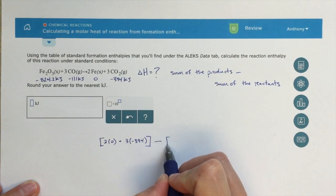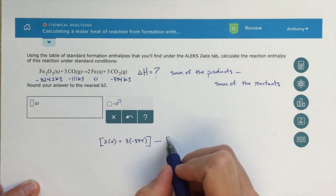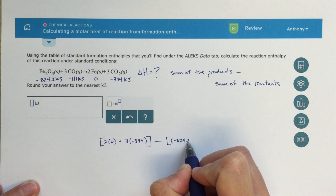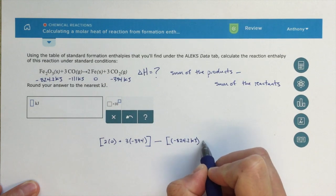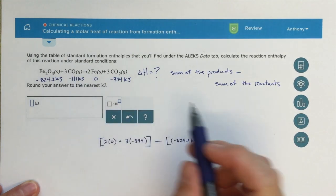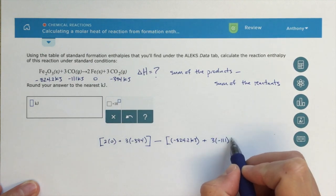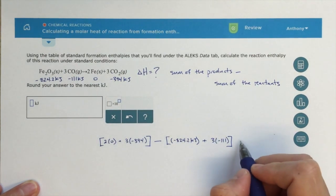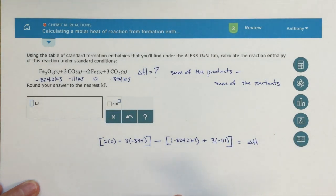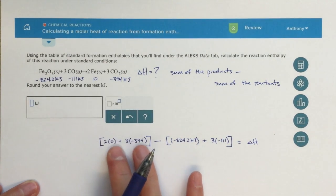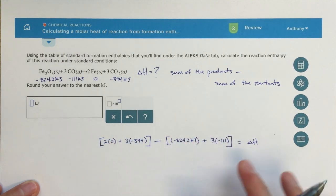And then I'm going to subtract. So this is my sum of my products. Subtract the sum of my reactants. So iron oxide minus 824.2 kilojoules plus 3 times CO minus 111. And then this will equal my overall enthalpy change, right? It's the difference. Enthalpy is the difference between the energies of the reactants and the products. And this calculation is actually showing exactly what's the difference between the energies of the products and the reactants. That's my delta H.